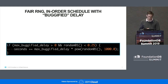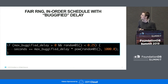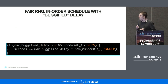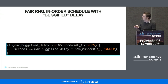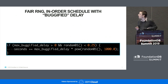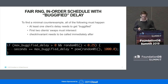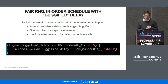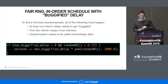If you are using FoundationDB's current strategy for scheduling tasks: we've got a fair random number generator, and some of the time we are going to delay for longer than requested — that's called a bugified delay. This is kind of the probability distribution FoundationDB is currently using; it's skewed towards zero, so most of the time it will delay for exactly what was requested or slightly more. To find the minimal counter example, we need at least two clients, one of them needs to get their delay bugified, the client swaps need to intersect, and check invariant needs to be called immediately after. The probability of all of these happening is pretty low.